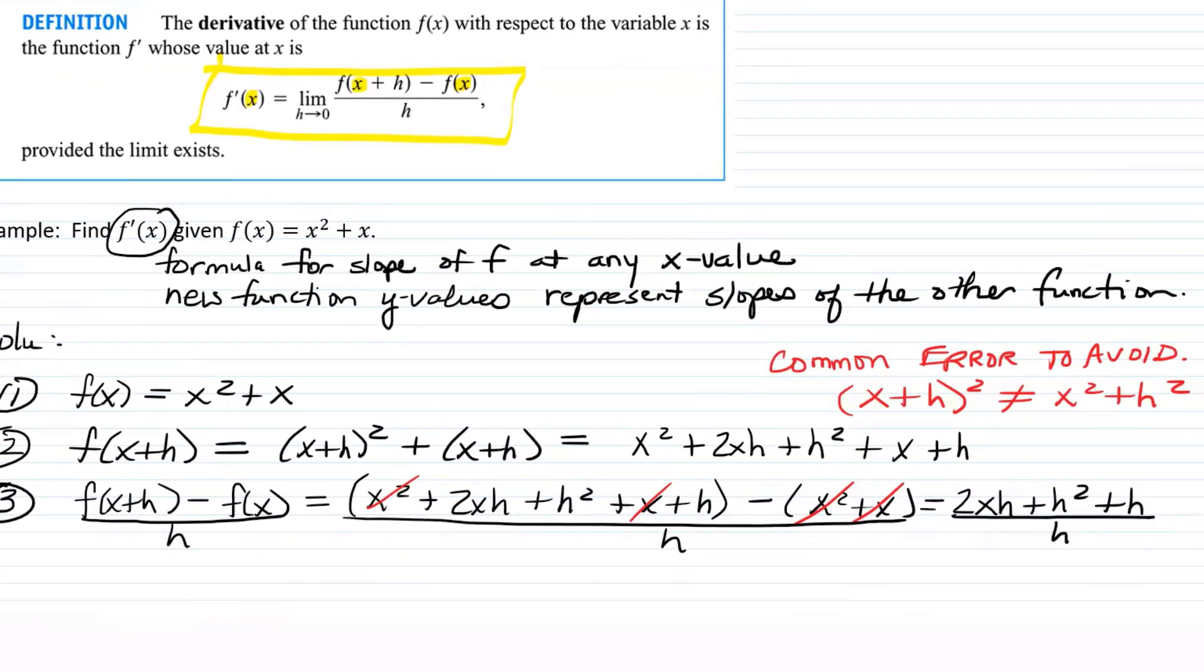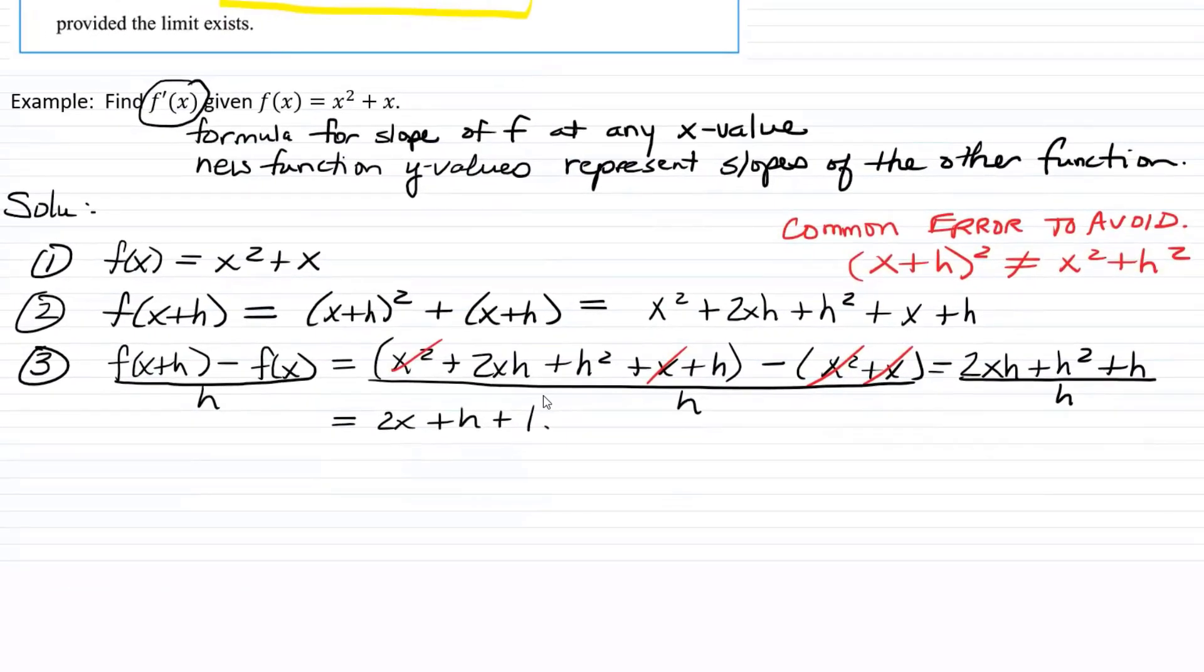And so what's going to happen is the x squared and x squared cancel, the x and the x cancel. And so we're just left with 2xh plus h squared plus h. And I believe I actually said in step three to divide that by h. So let's go ahead and do that. So each of these terms has a factor of h that you can divide out. So this is going to be equal to 2x plus h plus 1, as long as h doesn't equal zero.